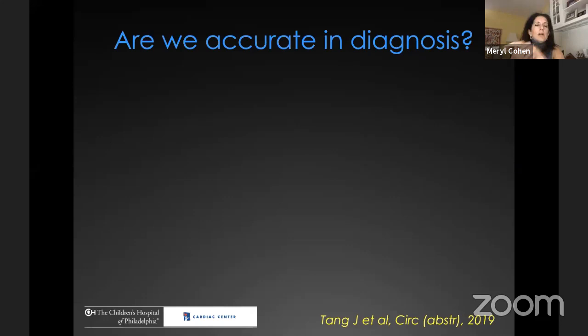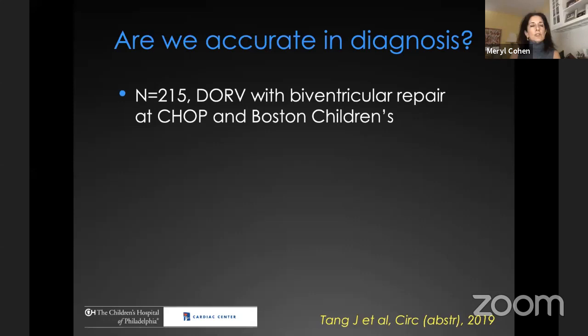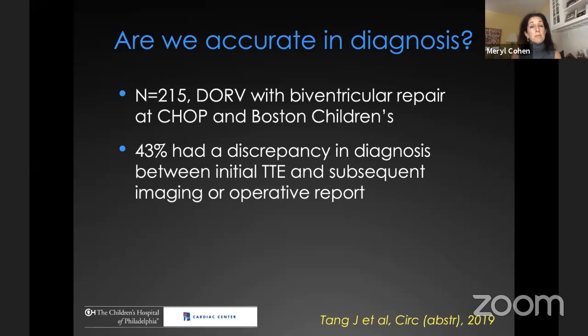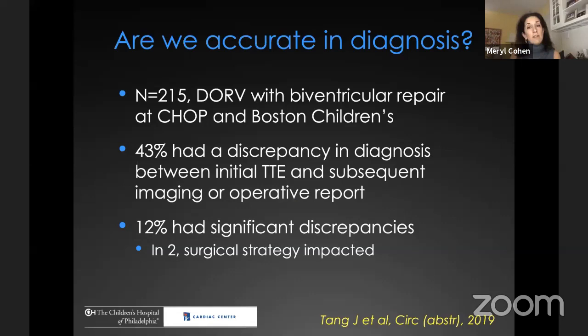Regarding diagnostic accuracy, a fellow in my program, Jess Tang, put together an abstract presented at the AHA last year. We looked at 215 double outlet right ventricle patients who underwent biventricular repair at CHOP or Boston Children's Hospital. Of those, 43% had a discrepancy in the diagnosis at the initial transthoracic echo compared to either subsequent imaging or the operative report — a very high number. 12% had a significant discrepancy, and in two of the 215 patients the surgical strategy was impacted. This shows how two-dimensional imaging can really challenge us.